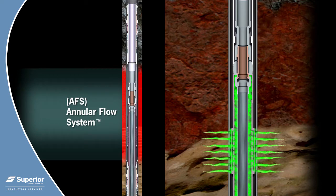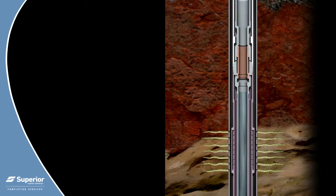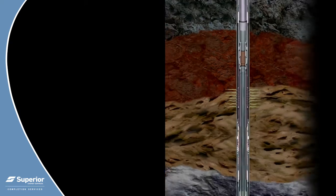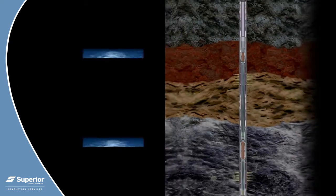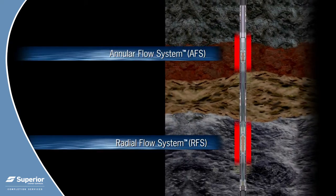The radial and annular flow valves provide bi-directional zonal isolation barriers during the HAWC well system installation. They are both opened hydraulically with applied tubing pressure, allowing interventionless operation when ready for production.